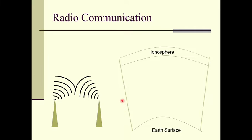In our atmosphere there is a layer called the ionosphere, which contains ions of various atoms or molecules. When radio waves are transmitted from a tower, they will be reflected back from the ionosphere and clouds and therefore received by another antenna placed at a far distance on the earth's surface. By using this technique we can do long distance communications through radio waves.